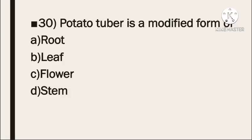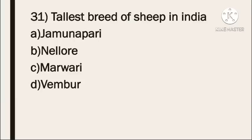Next question: potato tuber is a modified form of — Option A: root. Option B: leaf. Option C: flower. Option D: stem. The correct answer is stem — potato tuber is a modified form of stem.